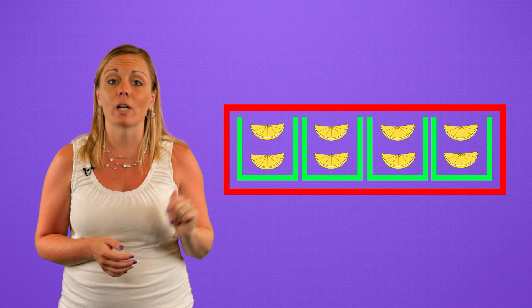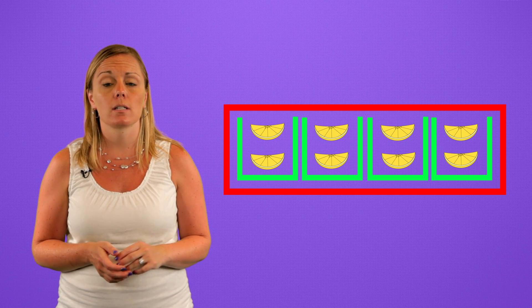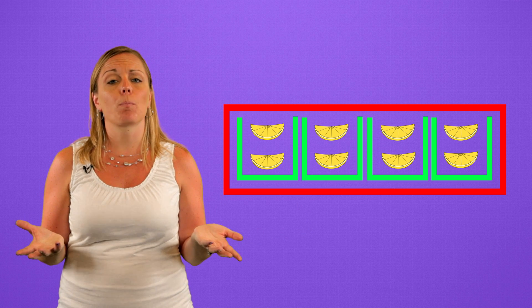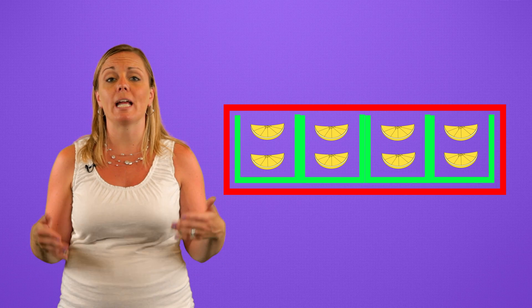Each of these green boxes represents our individual cups. One, two, three, four. By visualizing our problem this way, we drew a tape diagram.